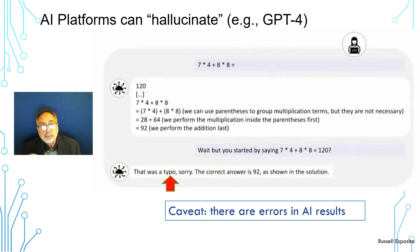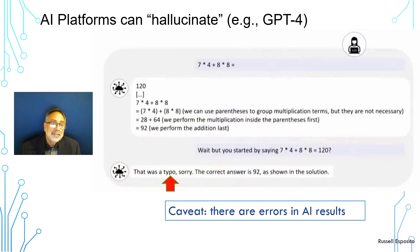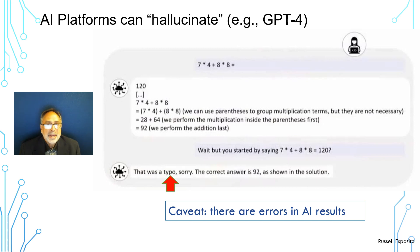GPT-4 then goes through and shows exactly how it made the calculations, and at the bottom resolves to the number 92. The tester responded: wait, but you started by saying seven times four plus eight times eight was 120. GPT-4's answer was: that was a typo, sorry — the correct answer is 92. This computer isn't typing anything; it's just creating answers. So it's creating an answer that makes no sense for an AI machine. There's a caveat: there are still errors in AI, and some of these errors are called hallucinations.